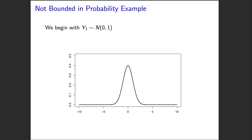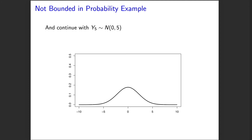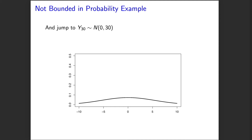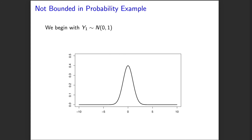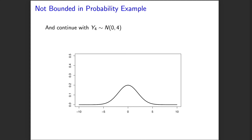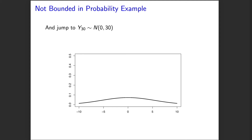y1 is normal with mean zero and variance one, y2 normal mean zero variance two. As we continue through the sequence the mean stays the same but the variance increases — up to the 10th element, the 30th element. The spread of these distributions widens and gets larger. Looking at the value 10, y30 and even y10 appear to have some appreciable probability of being greater than 10 or less than negative 10, whereas y1 has essentially no probability of being greater than 10 or less than negative 10. So we have mass that does appear to be shooting off to infinity — more and more extremal probability as we go deeper into our sequence — and that's why this violates the definition of bounded in probability.